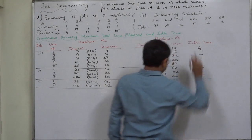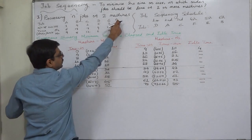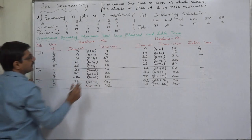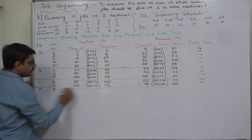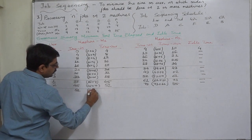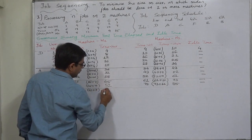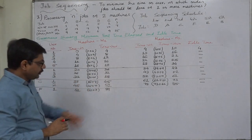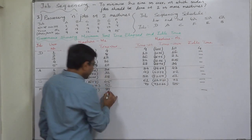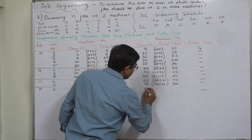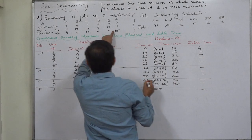Now it is the turn of job F with 3 units. Unit 1: timing on machine 1 is 52, 52 plus 7 equals 59. The unit is waiting, not the machine, so no idle time. 59 or 85, whichever is later: 85 becomes time in, 85 plus 15 equals 100 for time out on machine 2.